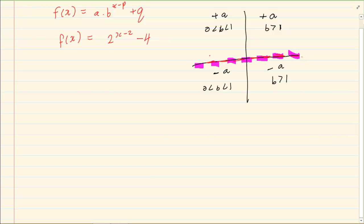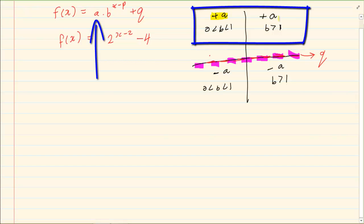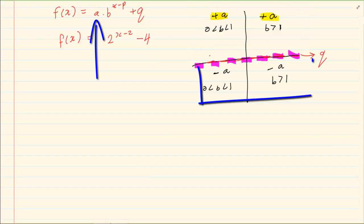Now what is my asymptote? My asymptote is Q. Now if the graph is a positive graph it's going to be on the top of the asymptote. And if it's negative it's going to be at the bottom of the asymptote.